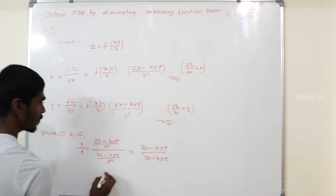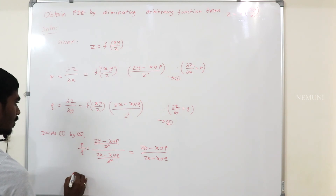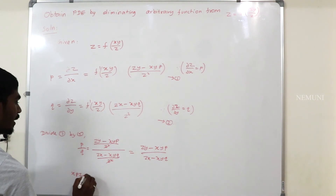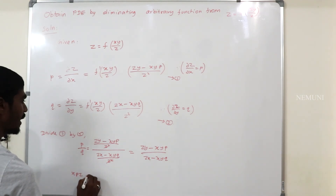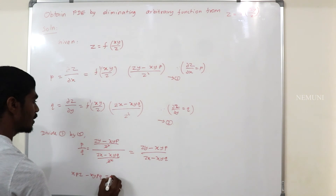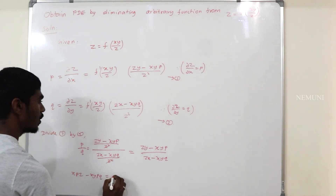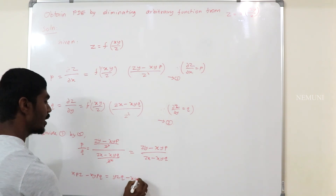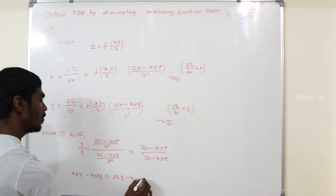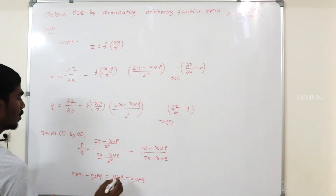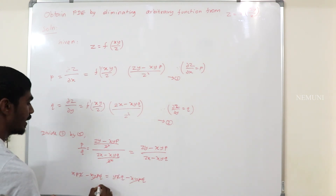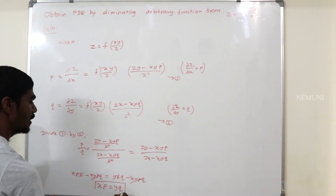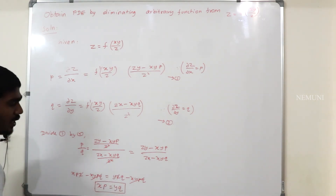Cross-multiplying and simplifying, we arrive at the required partial differential equation in terms of x, y, p, q, and z.